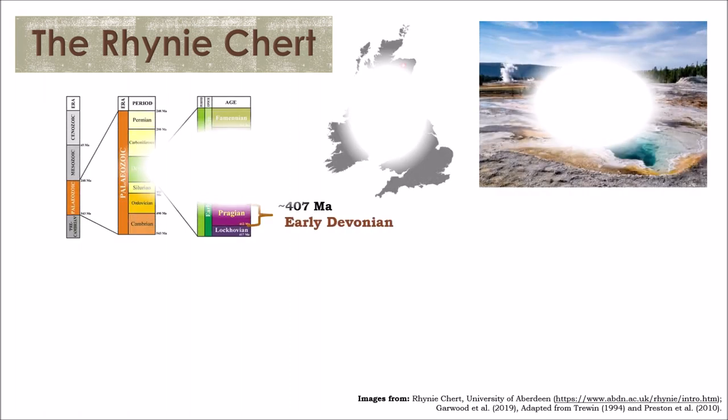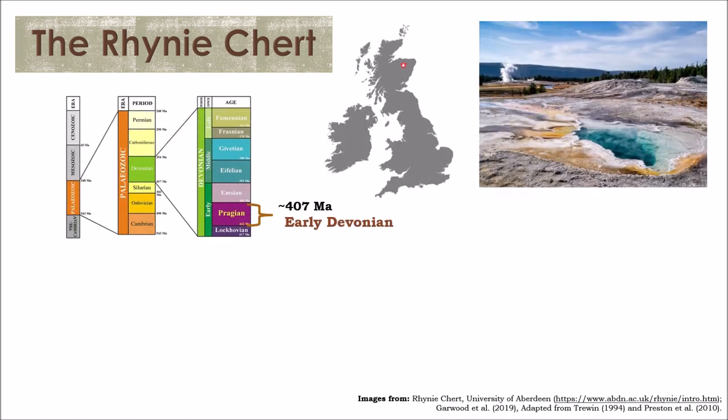The Rhynie Chert is a remarkable paleontological site located in Aberdeenshire, Scotland, originated by an old hot spring system around 407 million years ago. This hot spring environment gave rise to silica sinters and chert units, along with several lacustrine sandstone and shales.